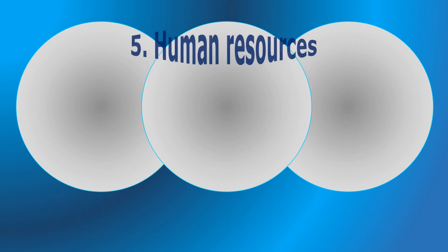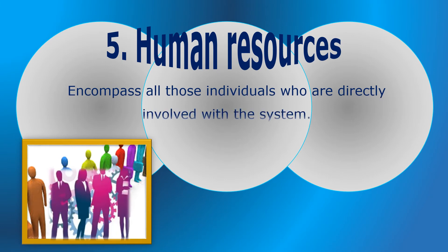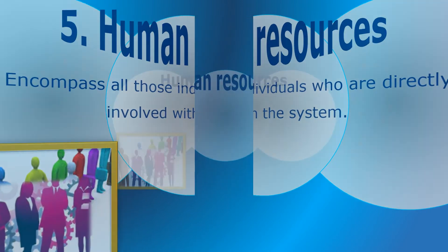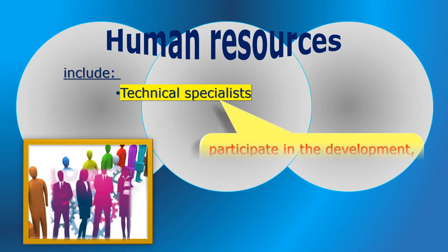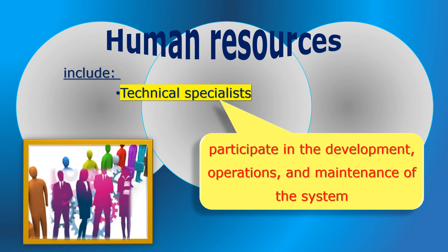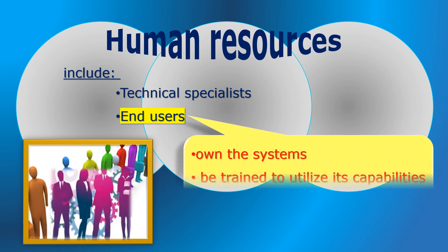Human resources. Human resources encompass all those individuals who are directly involved with the system. People are a key building block of any information system and play a critical role in its success. The human component includes technical specialists who participate in the development, operations, and maintenance of the system, as well as end users who own the systems and should be trained to utilize its capabilities and make the best use of it.